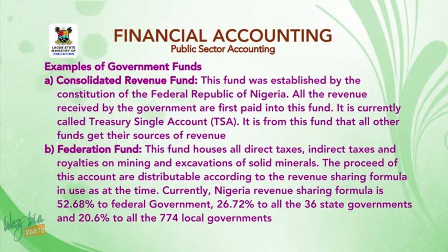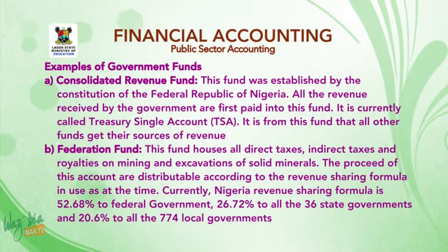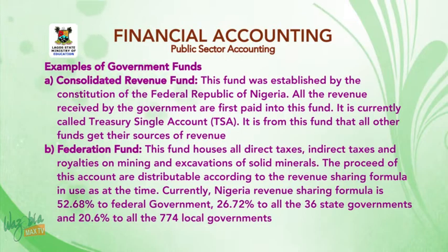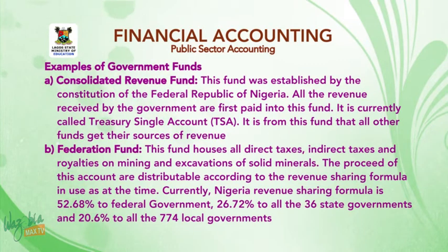B, the Federation Fund — this fund houses all direct taxes, indirect taxes, and royalties on mining and excavation of solid minerals. The proceeds of this account are distributable according to the revenue sharing formula in use. Currently, Nigeria's revenue sharing formula is 52.68% to the federal government, 26.72% to all the state governments, and 20.6% to all the 774 local governments.